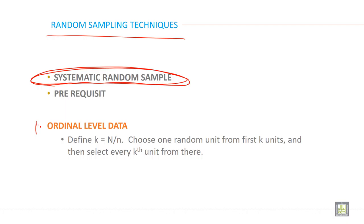When you have ordinal level data only, then you can apply systematic sample. And what are the steps?